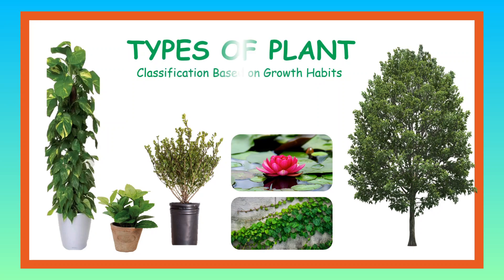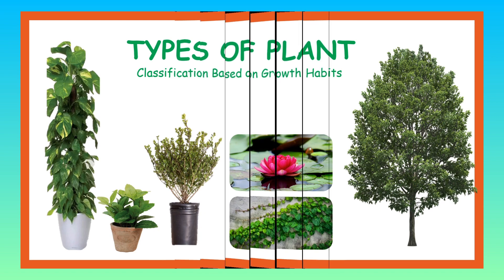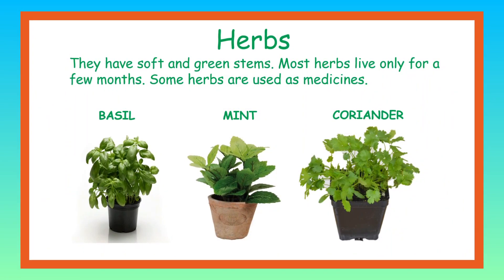Now, let us learn the plant's classification based on the growth habit. Growth habit refers to the plant's growth and its development or change in the plant's height, shape, and the kind of growth it undergoes. First, let us see about herbs. They have soft and green stem. Most herbs live only for a few months. Some herbs are used as medicines. Some examples of herbs are basil, mint, and coriander.